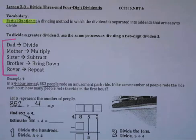Welcome to Chapter 3, Lesson 8. Lesson 8 covers dividing three and four-digit dividends. We have one vocabulary word for this lesson, which is partial quotients. Partial quotients is a dividing method in which the dividend is separated into addends that are easy to divide.